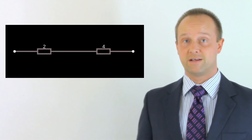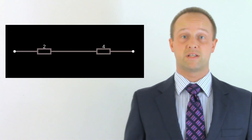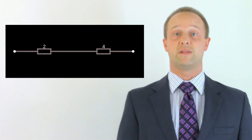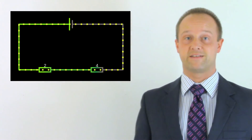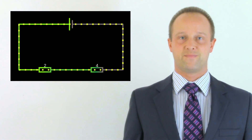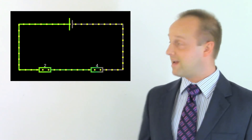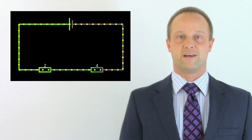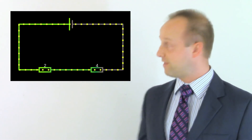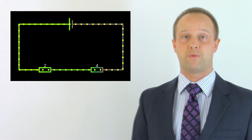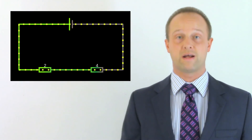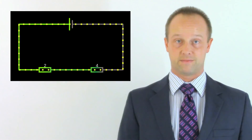You may be looking at a part of a circuit like this, where we would say the components are in series with each other, or you might look at an entire circuit like this, where everything is in series. This is a series circuit, where as the electricity flows around the loop, it passes through the components one after another in order.